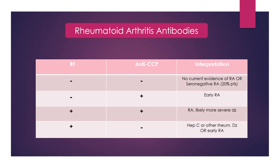If you have negative rheumatoid factor and positive anti-CCP, as mentioned earlier, it could just be early RA because the anti-CCP can appear first. On the contrary, the reverse can happen as well, which we'll see in the fourth line.